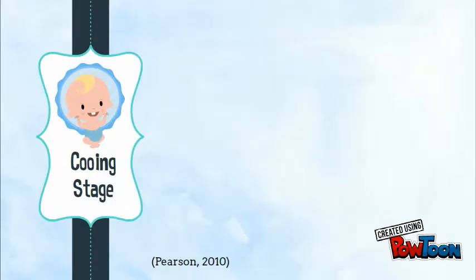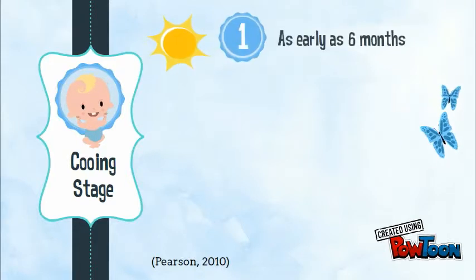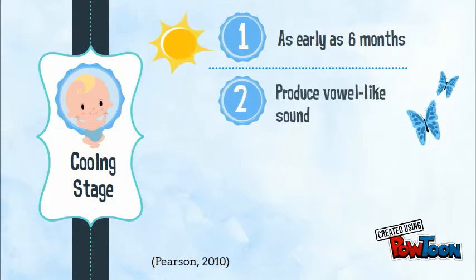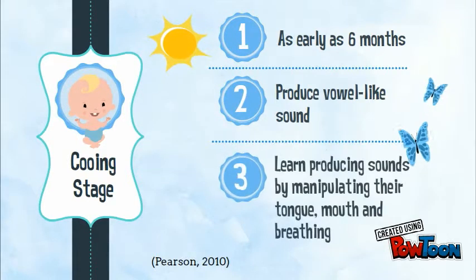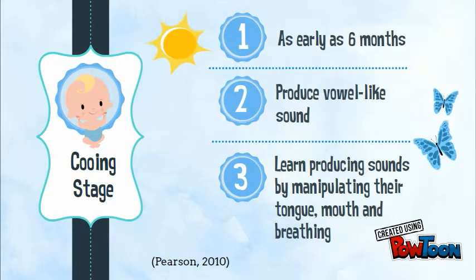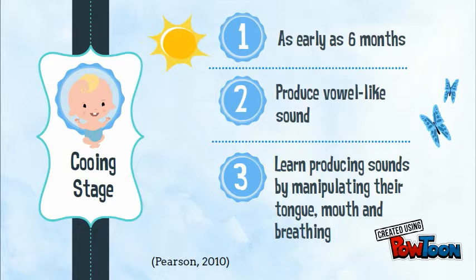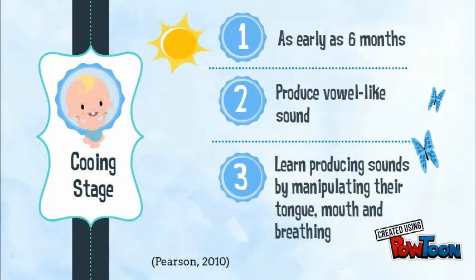Cooing stage starts off as early as six months. At this stage, children only produce vowel-like sounds. They learn to produce these sounds by manipulating their tongue, mouth and breathing.